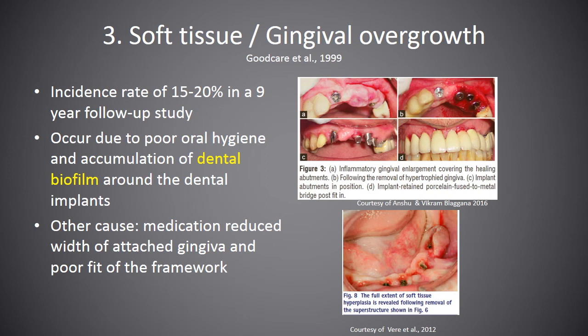Soft tissue or gingival overgrowth is one of the examples of a biological complication. An incidence rate of 15–20% has been reported in a 9-year follow-up study. It may occur due to poor oral hygiene and blood accumulation around the dental implants. Other causes include medication, reduced width of the attached gingiva, poor fit of the framework, and dead space beneath the framework.